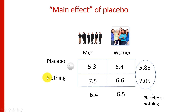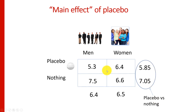Similarly, for the main effect of placebo, we average across the two different genders. For the placebo pill group, men had a mean of 5.3 and women had a mean of 6.4, so the resulting mean is 5.58. For the group who got nothing, men had a mean of 7.5 and women had a mean of 6.6, so the resulting mean is 7.05. This comparison tells us about the main effect of getting the placebo — on average across men and women, people who got the placebo had lower pain ratings than people who got nothing.